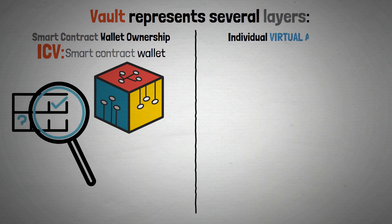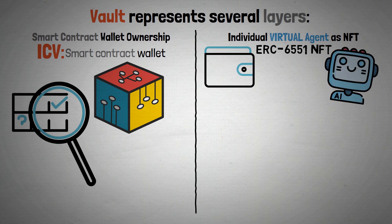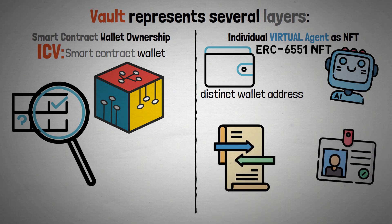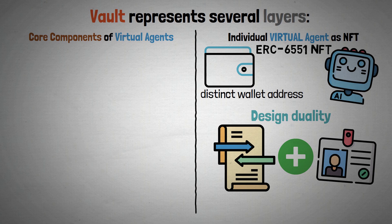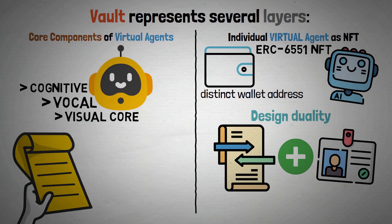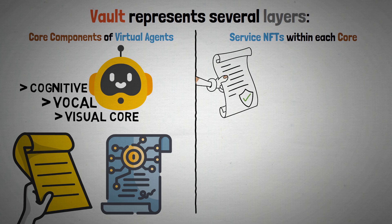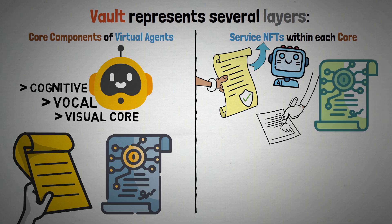Each individual virtual agent is created as an ERC-6551 NFT, which also acts as a distinct wallet address. This design duality seamlessly combines ecosystems, transaction elements, and personal identity. Each agent has a cognitive, vocal, and visual core that is registered in the smart contract. Approved contributions are saved as service NFTs within each agent, and a smart contract is used to register the relationship between these service NFTs and the core.